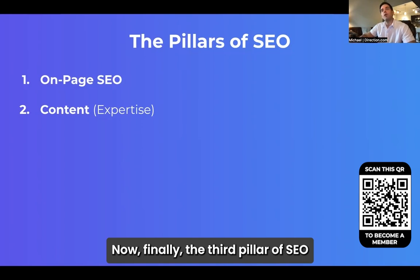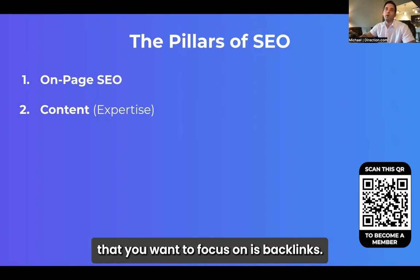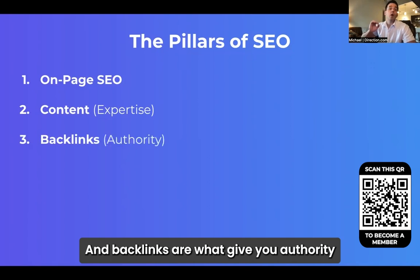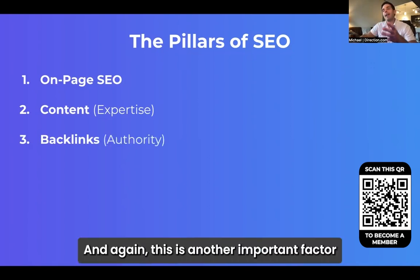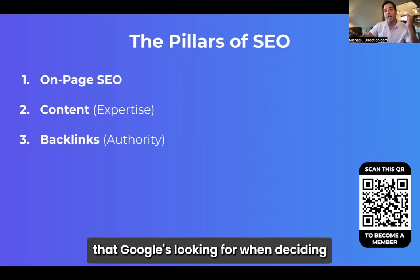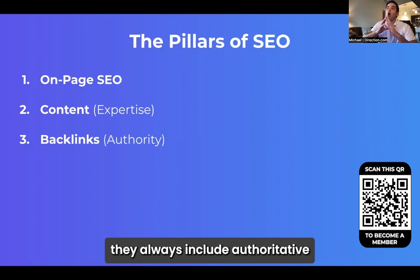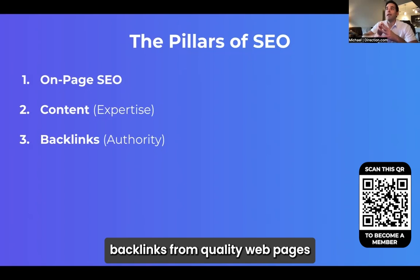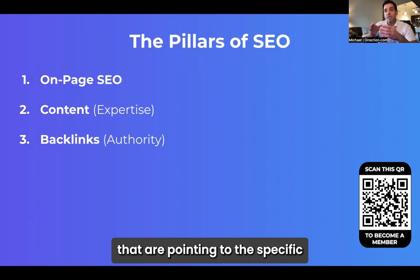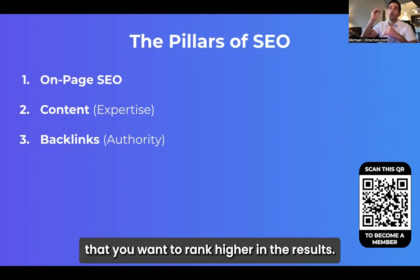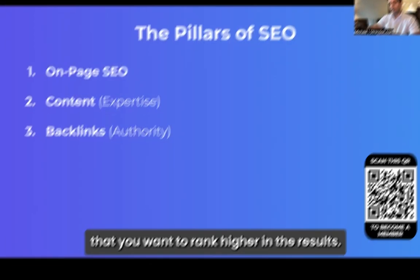Finally, the third pillar of SEO that you want to focus on is backlinks. Backlinks are what give you authority in Google's eyes, and this is another important factor that Google looks for when deciding who's going to rank in those results. Our SEO campaigns always include authoritative backlinks from quality web pages pointing to the specific pages on your site that you want to rank higher in the results.